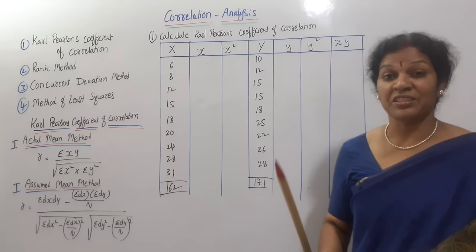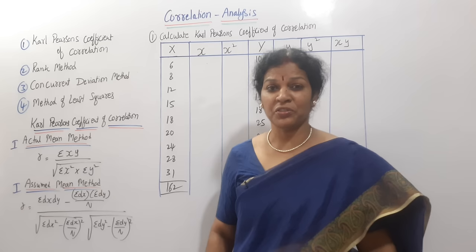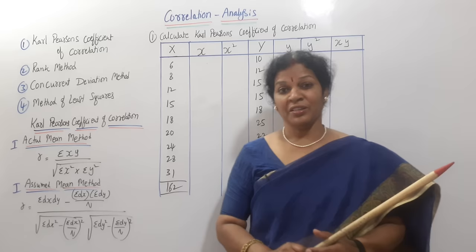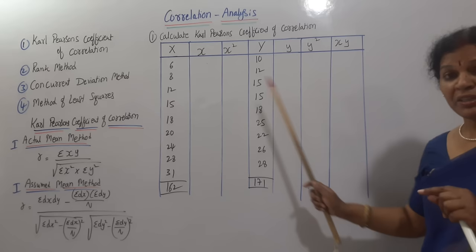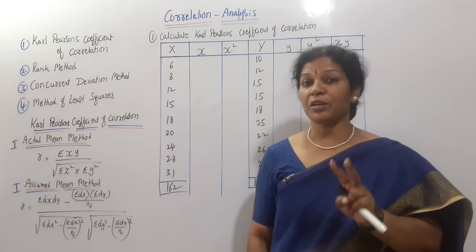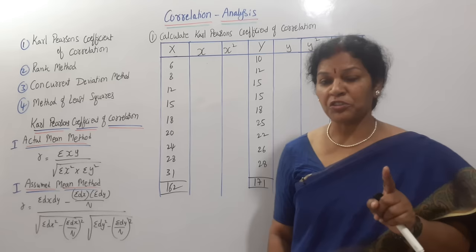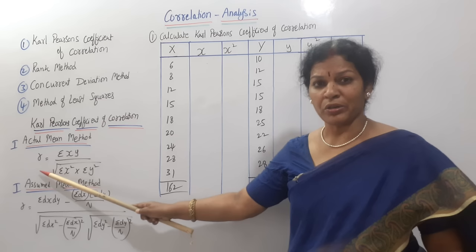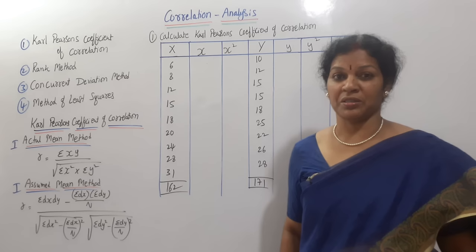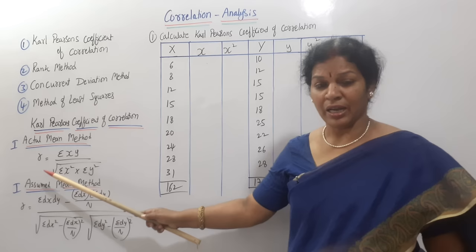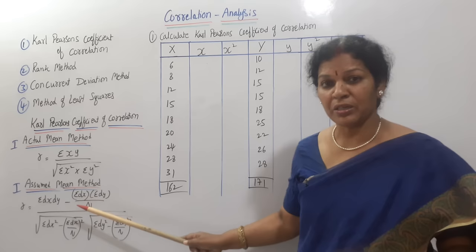Shall we go for the first method? Carl Pearson's coefficient of correlation can be calculated when two variables are given — X and Y. There are two methods: actual mean method and assume mean method. For the actual mean method, the formula is: r equals sigma xy divided by the square root of sigma x-squared into sigma y-squared.